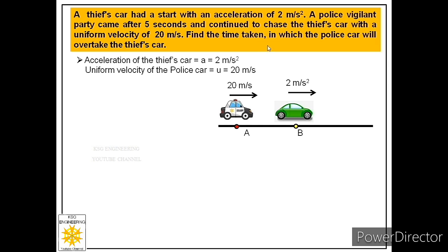From the given question it is very much clear that the motion of thief's car is uniformly accelerated motion, because the thief's car had a start with an acceleration of 2 meter per second square. This means three equations are applicable for the motion of thief's car: V = U + AT, S = UT + ½AT², and V² - U² = 2AS. But the police car is moving with uniform velocity, so only one equation is applicable: x = x₀ + VT.